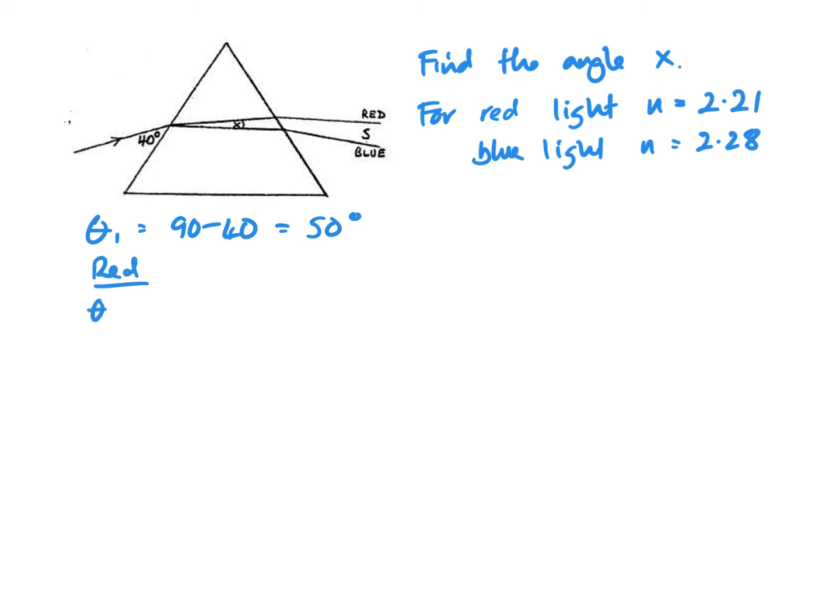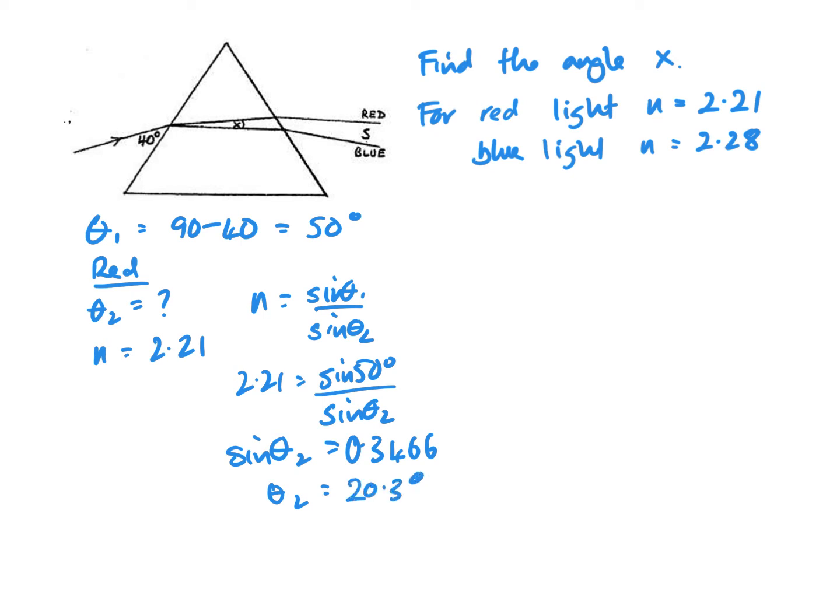So for red, theta 2 is what we're trying to work out, n is 2.21. So n equals sin theta 1 over sin theta 2. 2.21 equals sin 50 over sin theta 2. Sin theta 2 equals 0.3466, and therefore theta 2 is 20.3 degrees. Then just repeat the whole thing again for blue.